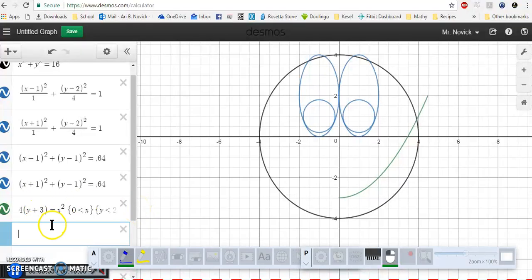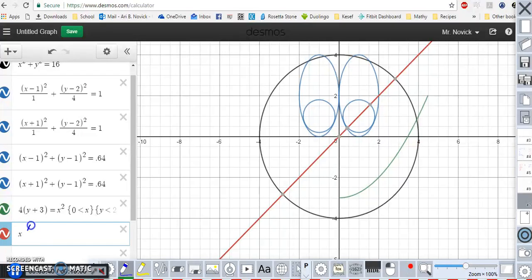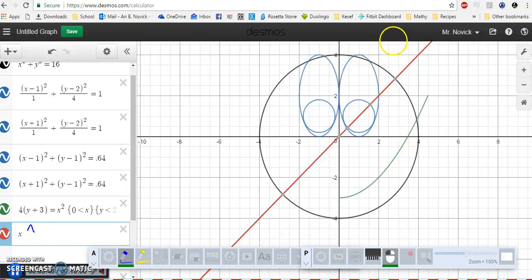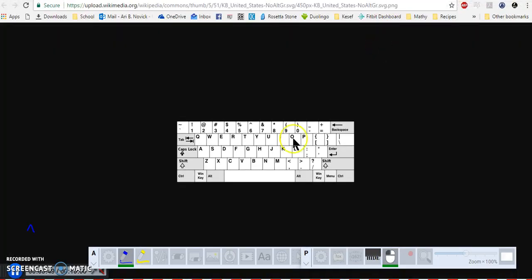The way I type in x squared is I type x and then the little caret symbol that looks like this on your keyboard. On your keyboard, you do shift and then 6 to make it.